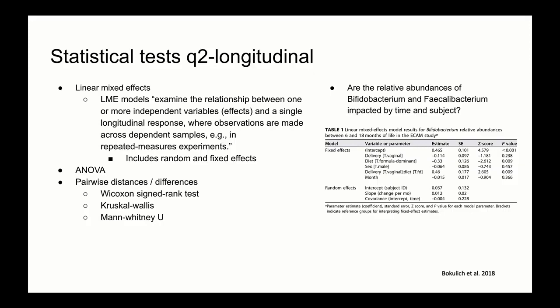Statistical tests supported by the QIIME 2 longitudinal plugin include linear mixed effects modeling, which we'll focus on, ANOVA, and various pairwise statistical tests, including the Wilcoxon signed rank test for dependent samples, Kruskal-Wallis for independent samples, and Mann-Whitney U for independent samples. The pairwise statistical tests are implemented in the pairwise distances or differences actions. Pairwise differences and distances should be used to determine differences between dependent or paired samples — this could be pre- or post-treatment samples or samples that were processed in two different ways.